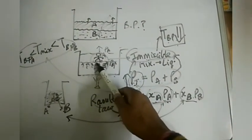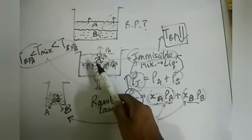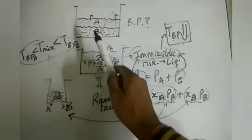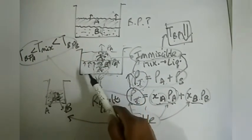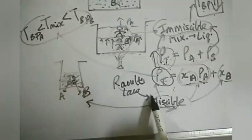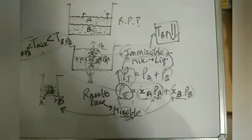To summarize: for immiscible liquids, B is pushing A out with full effort, so total pressure is higher and boiling point is lower. For miscible liquids, both compete in one phase. Please like, share, and subscribe.